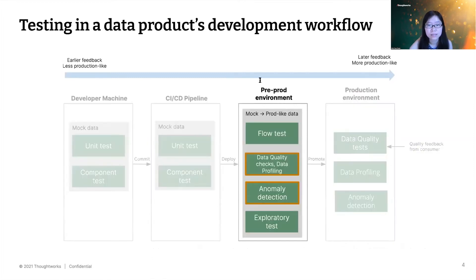Moving on to pre-production environments. Data quality checks, data profiling, and anomaly detection — if you can run in only one environment, I'd still suggest production. But if you really need to lower the risk of detecting bad data in production, you can do it earlier in pre-production environments, but you will need to do it with production-like data. As many of you know, that is not without cost — there is definitely a trade-off.